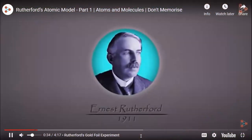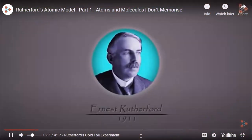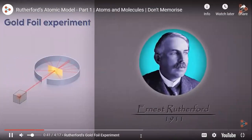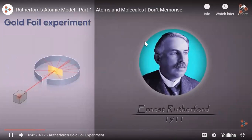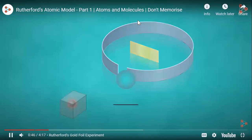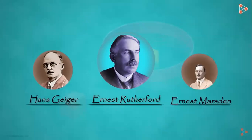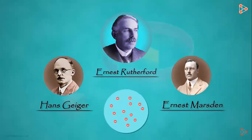Around the year 1911, a British physicist Ernst Rutherford carried out the famous gold foil experiment to understand the structure of an atom. The experiment was carried out by Rutherford along with Hans Geiger and Ernest Marsden. It was a breakthrough in the field of chemistry which helped him understand the structure of an atom in a more accurate manner.